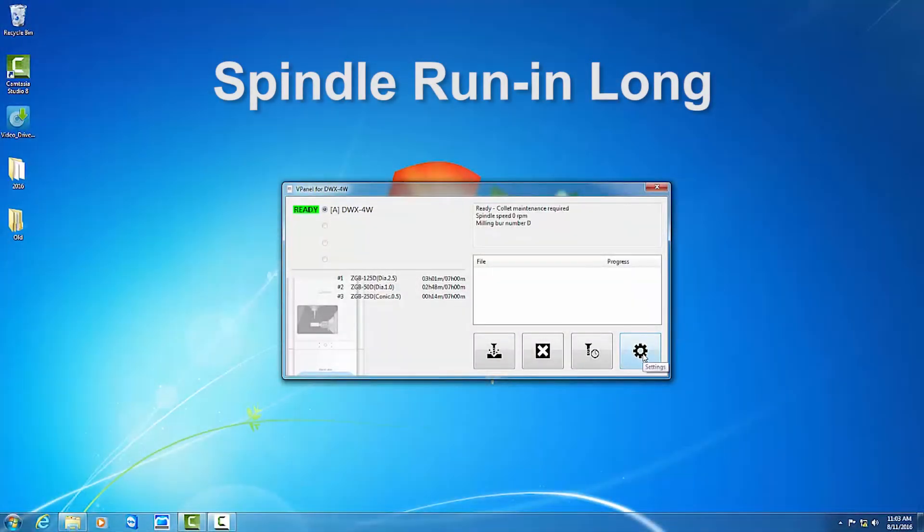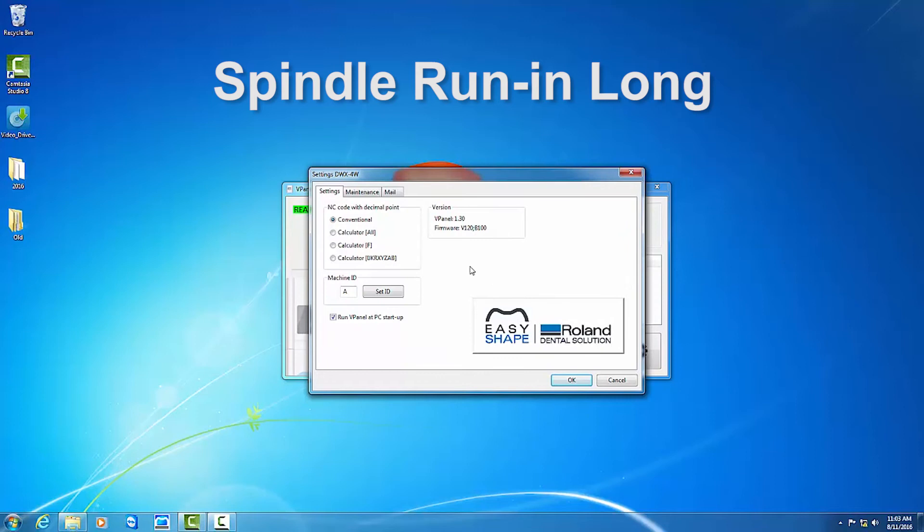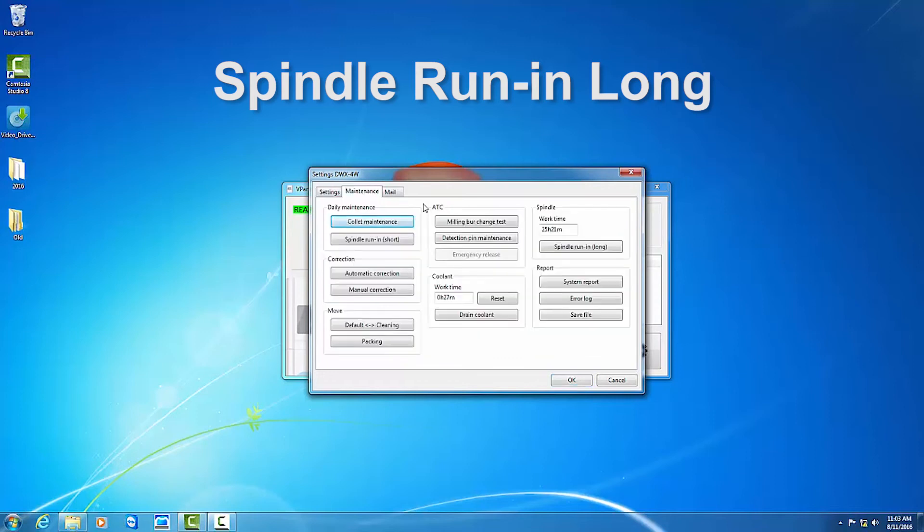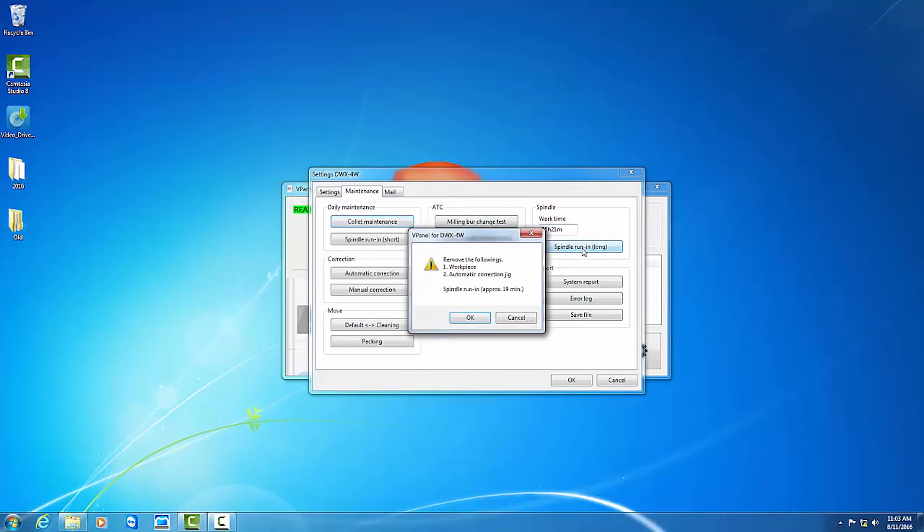In vPanel, click on the gear icon to open up settings and click on the Maintenance tab. Click on Spindle Run-in Long. Please note a spindle run-in long is required during the initial installation and after extended periods of inactivity. A spindle run-in short will be performed on a daily basis.